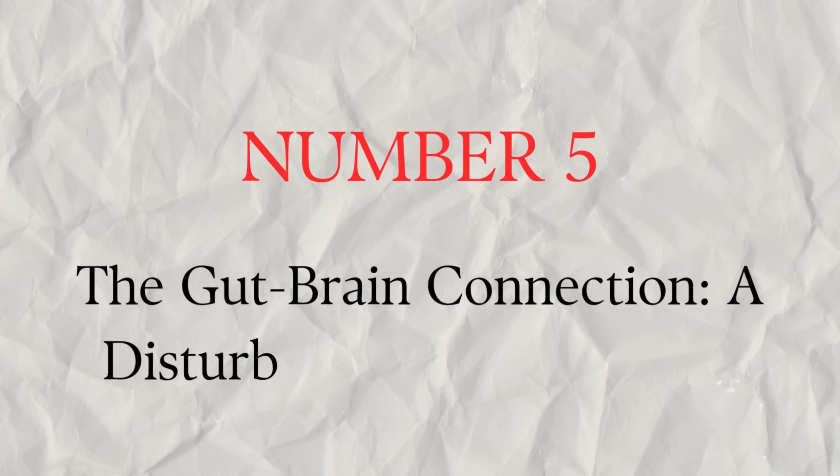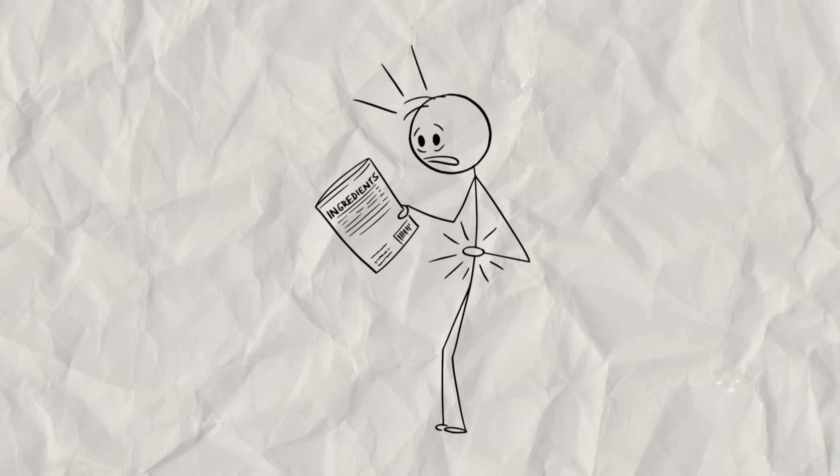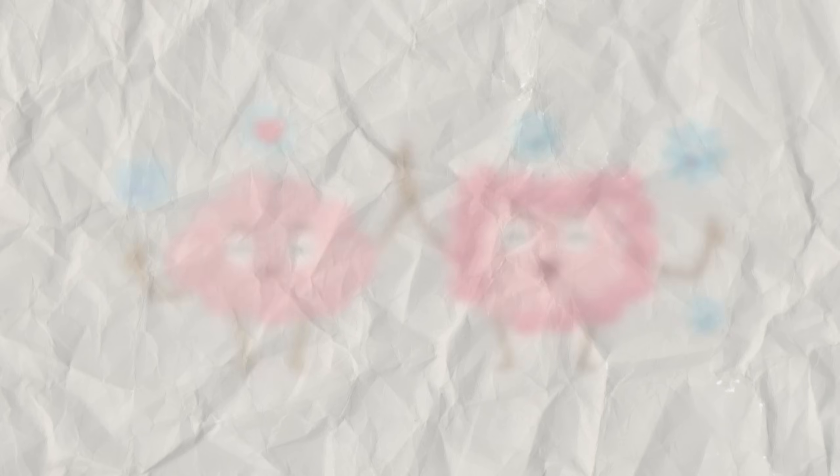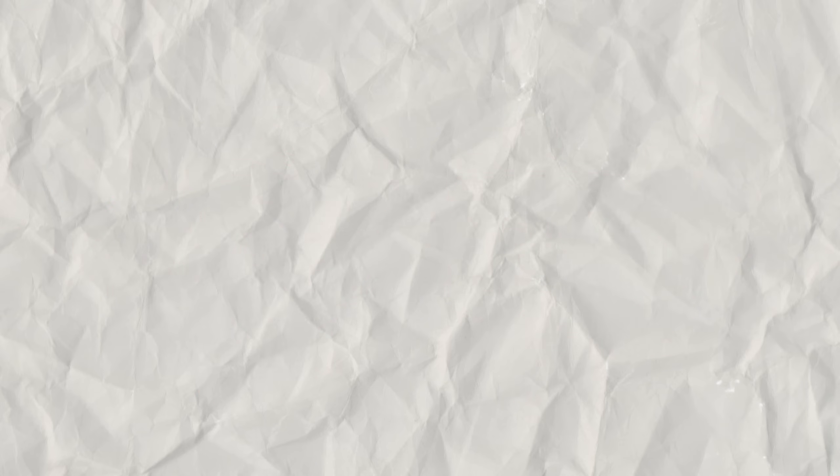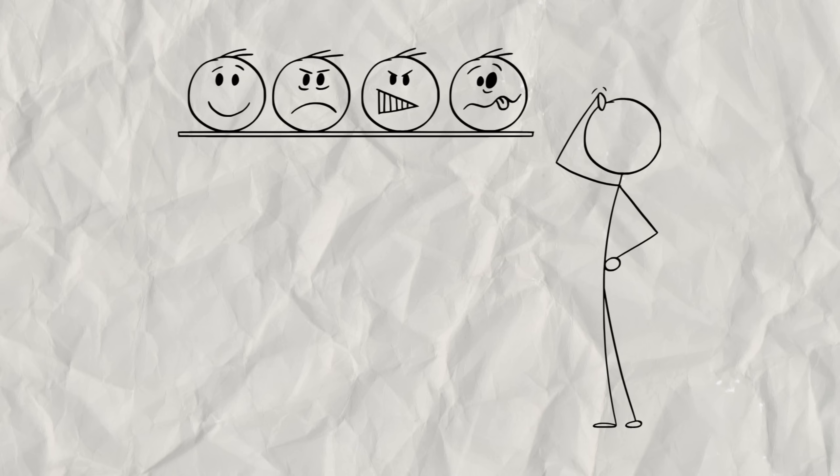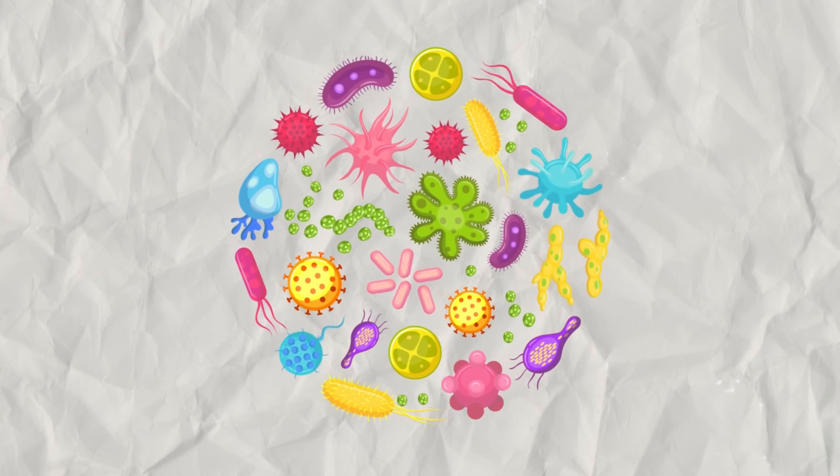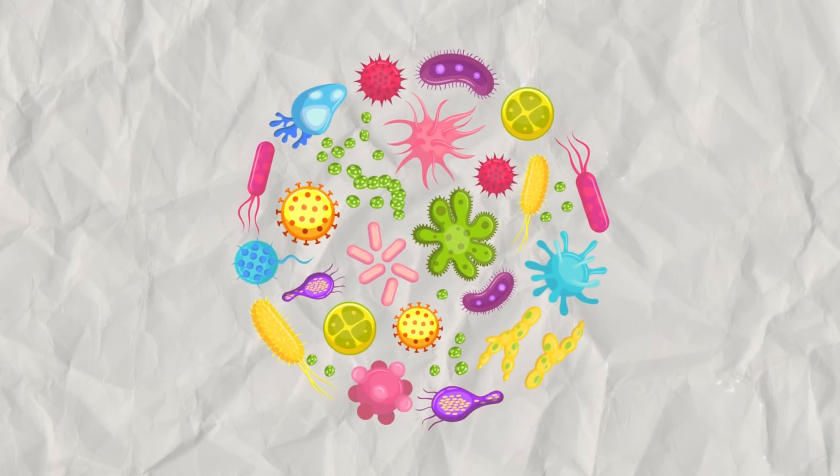Number five. The gut-brain connection. A disturbed inner ecosystem. Your gut is often called your second brain, and for good reason. It's teeming with billions of bacteria that influence everything from your mood to your immune system. Trauma can profoundly disrupt this delicate gut microbiome.